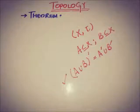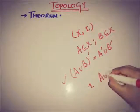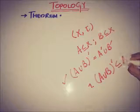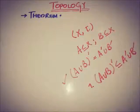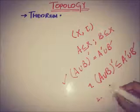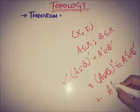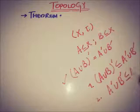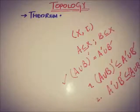To prove this, we need to establish two parts. First, that (A∪B)' is a subset of A'∪B', and second, that A'∪B' is a subset of (A∪B)'.